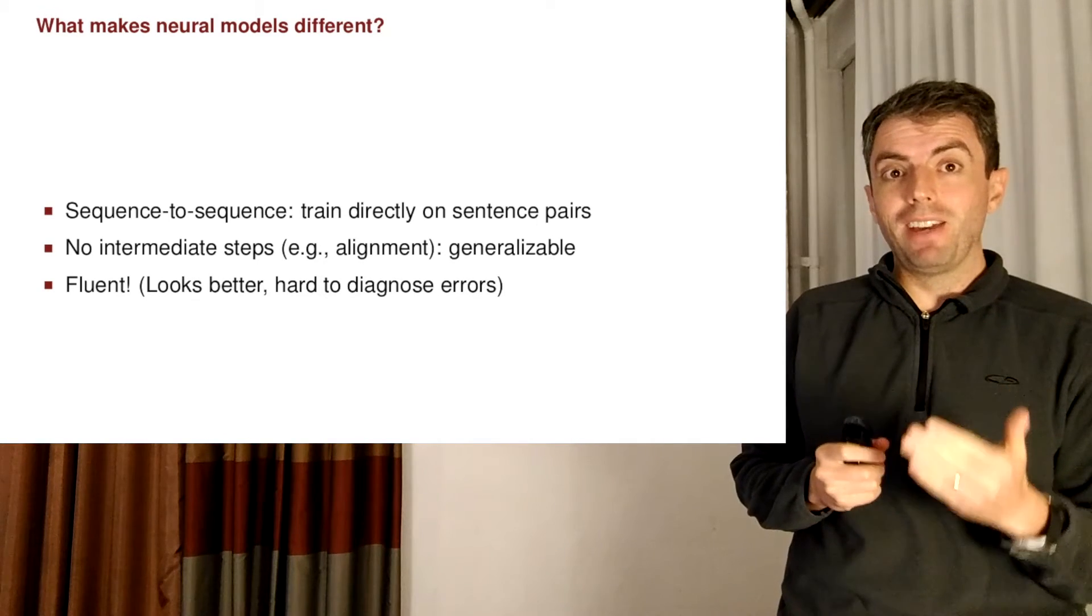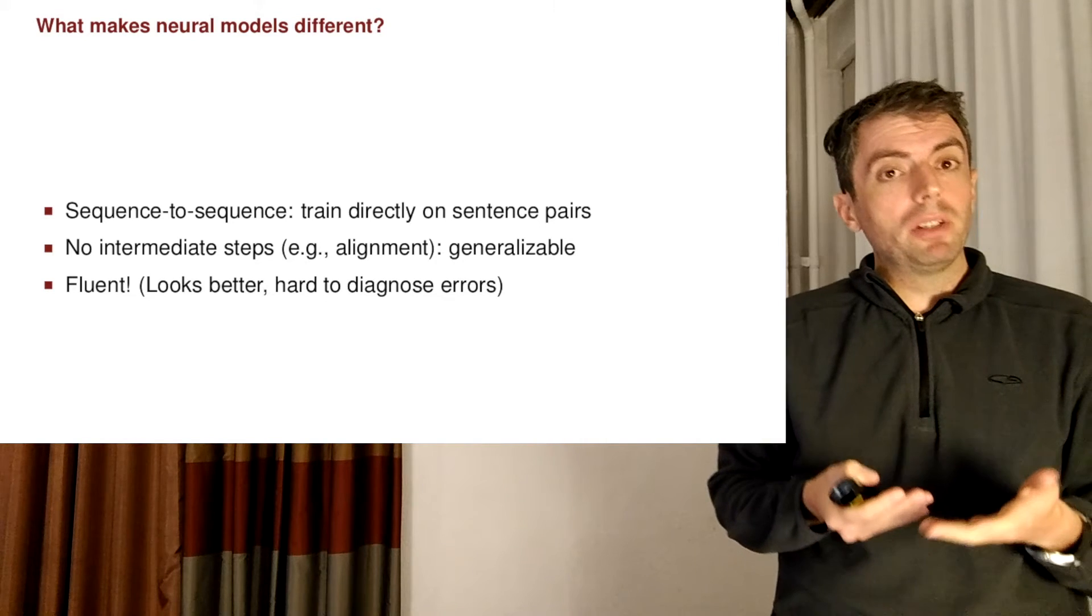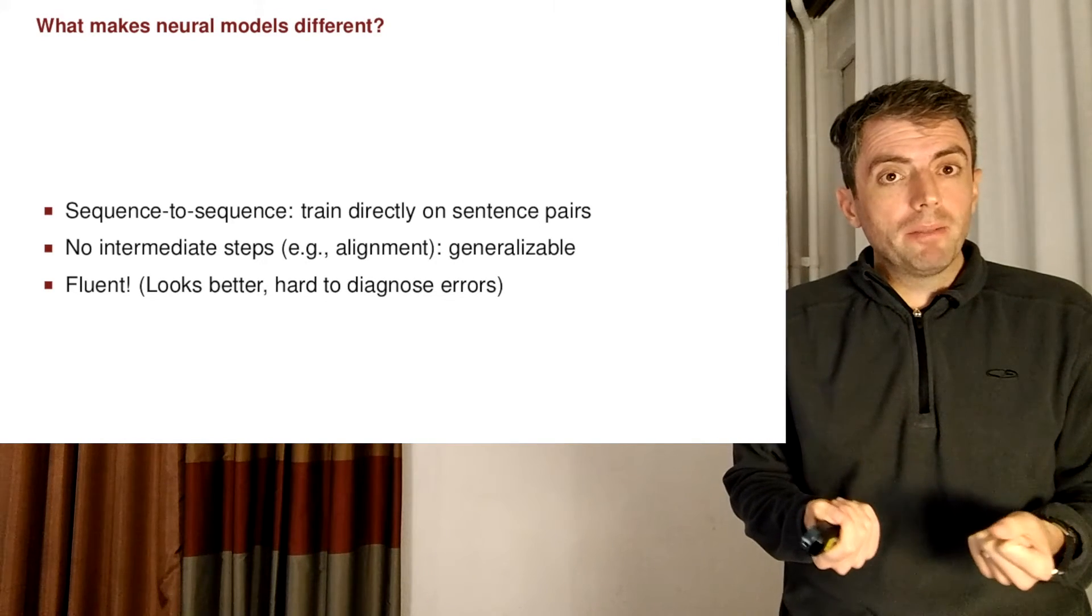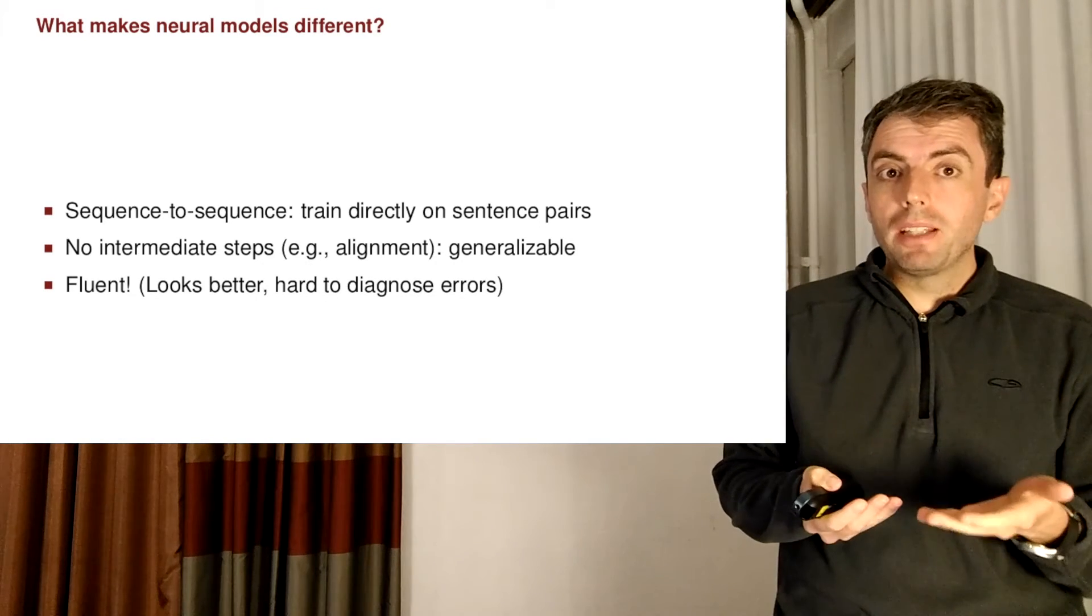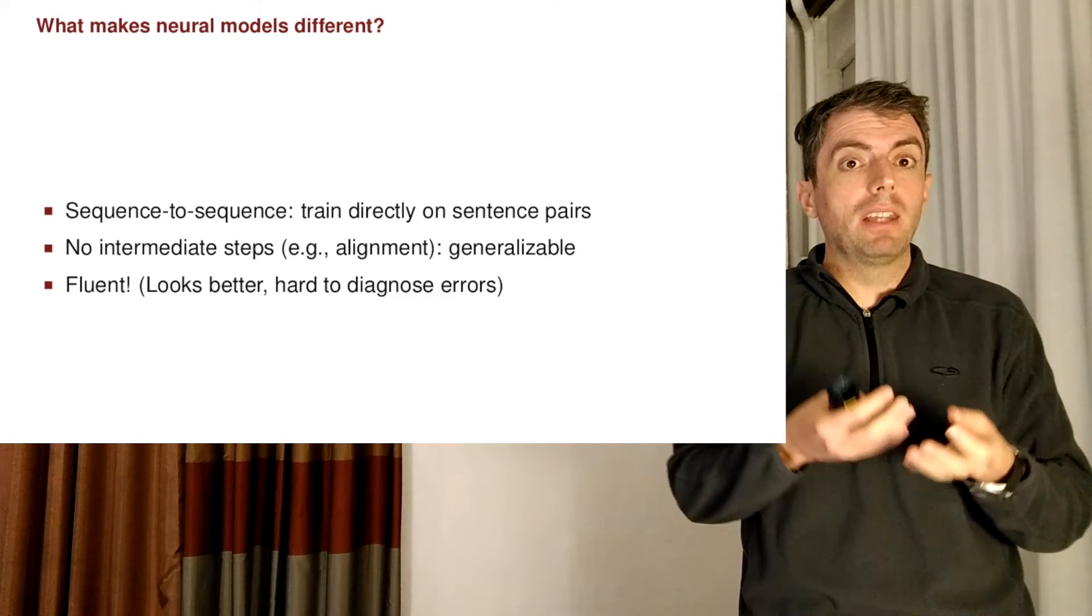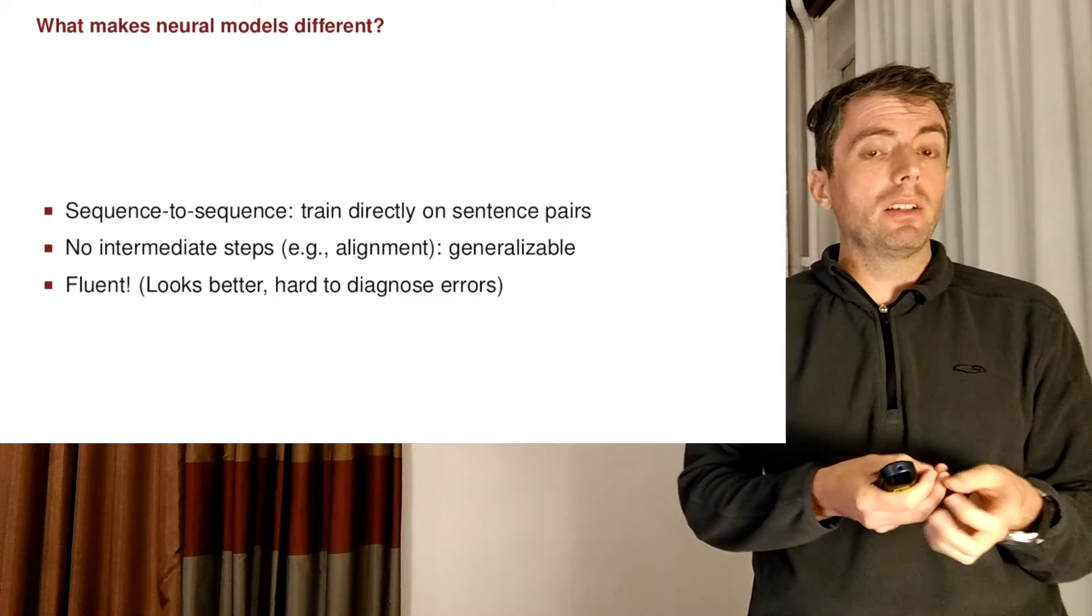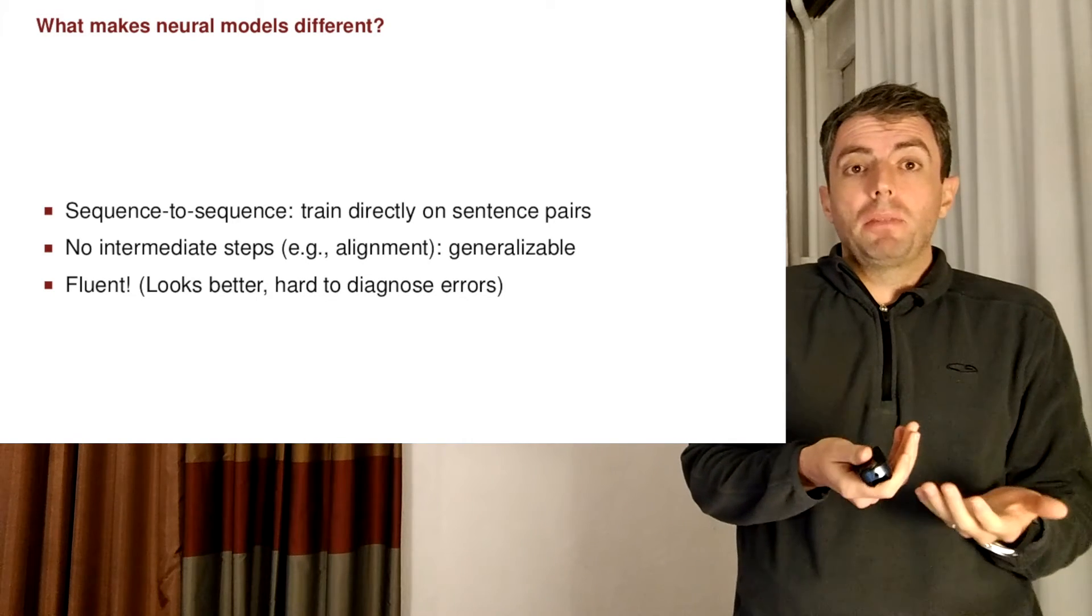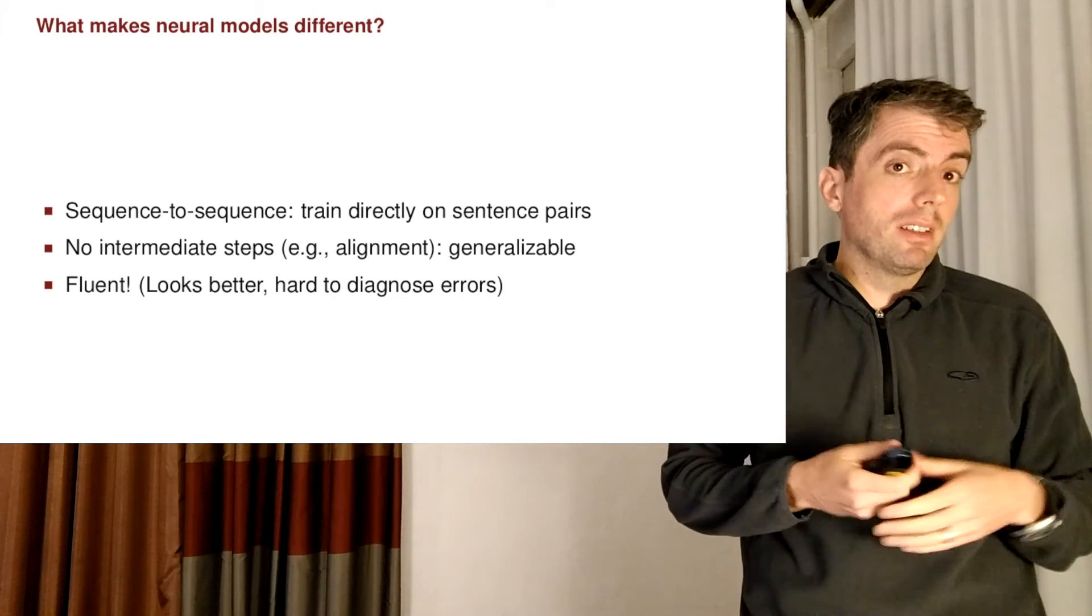Now, you might think that this is an advantage. If you're getting better output, doesn't that mean that the model is better? Well, with phrase-based models, when you had really crazy output, that often meant that the system did something wrong and you couldn't understand what it said. That meant that it screwed up, you shouldn't trust the translation.